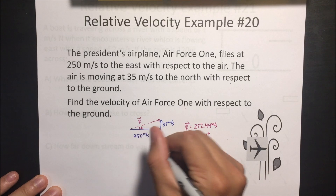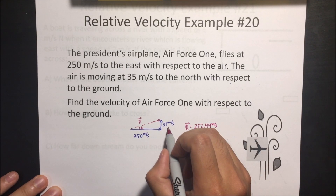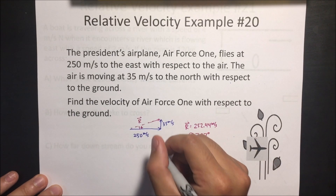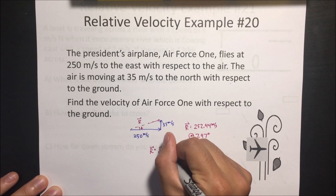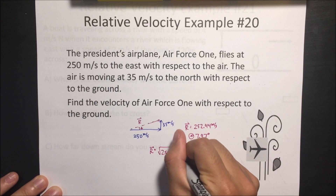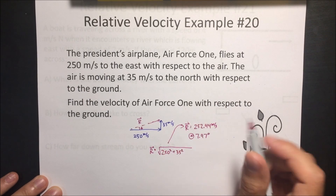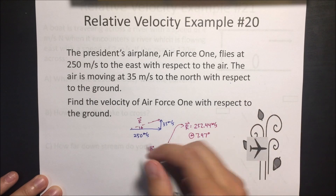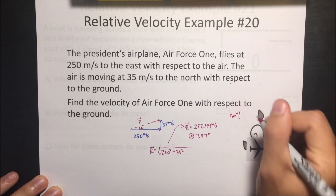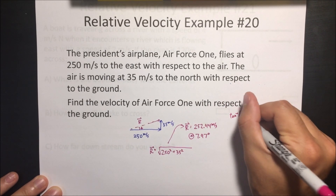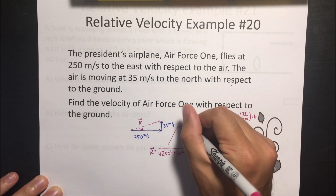Using the Pythagorean theorem: 250 squared plus 35 squared equals R squared, giving us the resultant vector. Then to find the angle, we use inverse tangent — opposite 35 divided by 250 — which gives us an angle of 7.97 degrees.